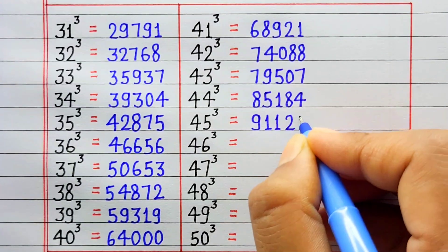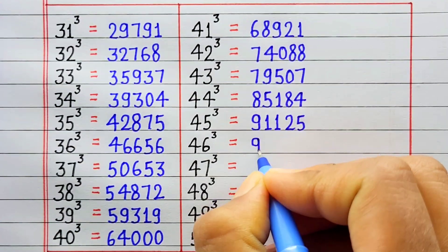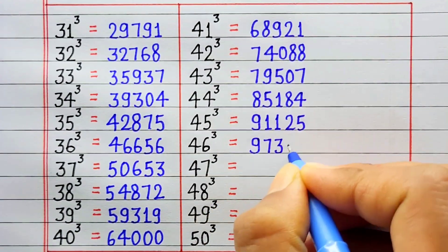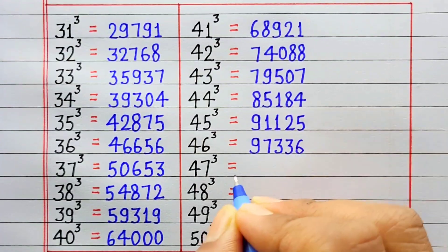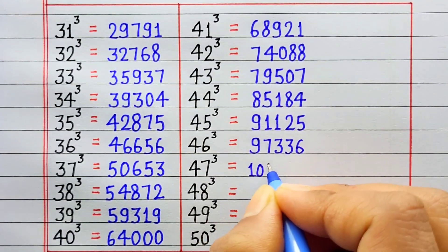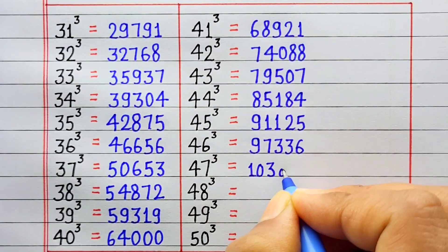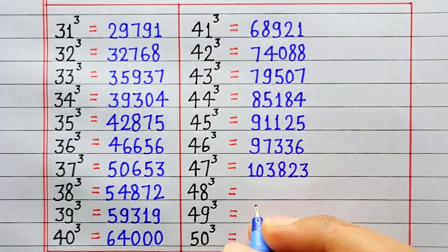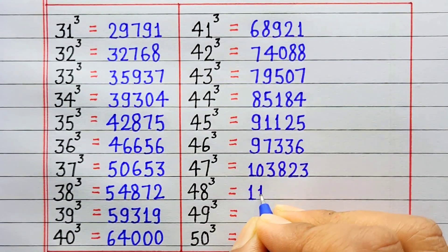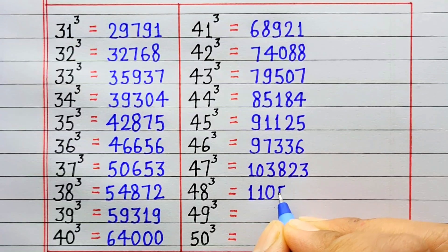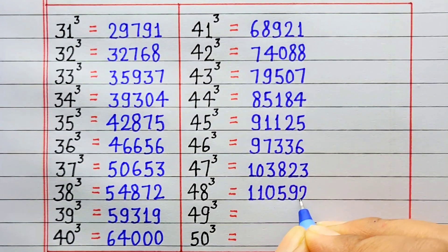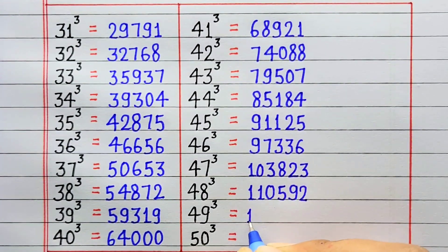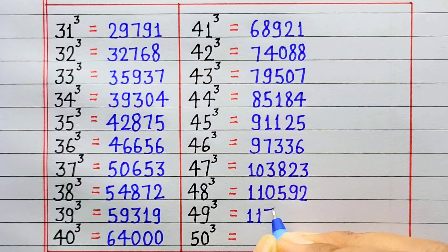Cube of 46 is 97336. Cube of 47 is 103823. Cube of 48 is 110592. Cube of 49 is 117649.